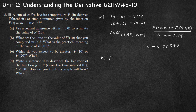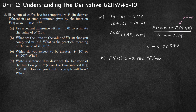Part B: what are the units on this value? F prime of 10 is approximately negative 3.336, and this is the rate of change in temperature with respect to time, so it's degrees Fahrenheit per minute. In the numerator of our fraction, we have the change in temperature — units of degrees Fahrenheit — and in the denominator we have the change in time, with units of minutes. So degrees Fahrenheit per minute are the units for our instantaneous rate of change.